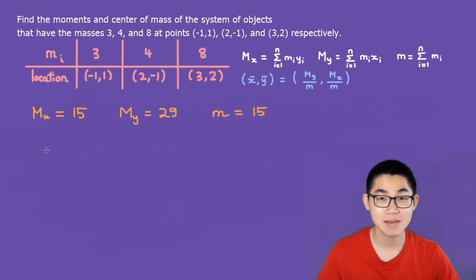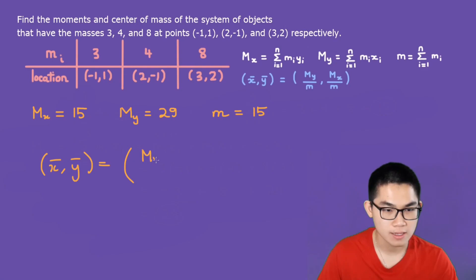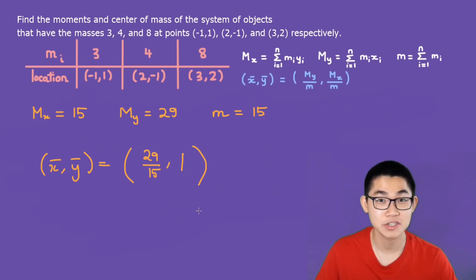The last step is to calculate the center of mass given this formula. So the center of mass located at x-bar, y-bar is going to be equal to m_y divided by m. So what is that? That's basically 29 divided by 15 and then m_x over m. So m_x is 15 over 15, which is just 1. And there you go. These are the answers to this problem.